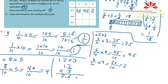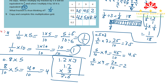Now using the direct method for 0.6: 6 times 7 is 42, and with one decimal place the answer is 4.2. Then 6 times 9 is 54 — with one decimal place that is 5.4. And 0.6 times 4: 6 times 4 is 24, one decimal place gives 2.4.